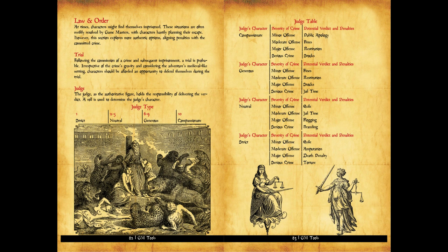We actually roll for the type of judge that will accommodate the trial. The judge can be anything from strict to neutral to compassionate or even generous, and that of course will affect the result. The judge, as the authoritative figure, holds the responsibility of delivering the verdict. A roll is used to determine the judge's character — you roll 1d10 to determine the type of judge. Then we move to the judge table to see what the type of judge entails. The type of judge is connected to the penalty that will be carried out.